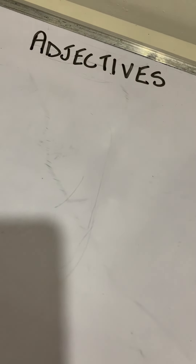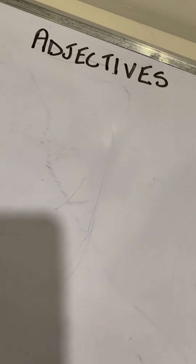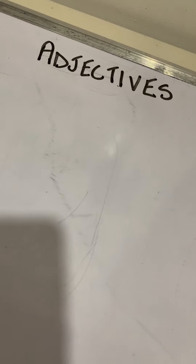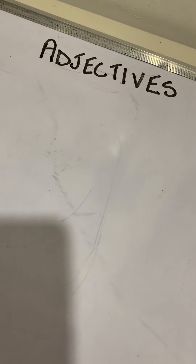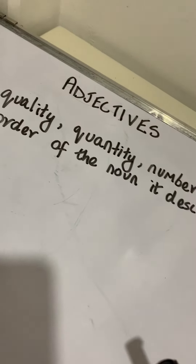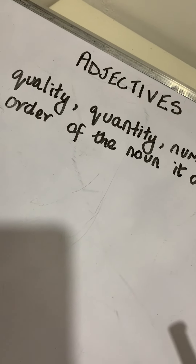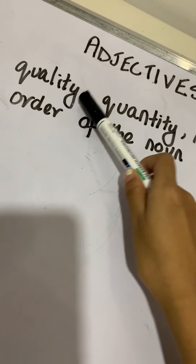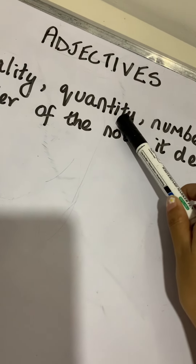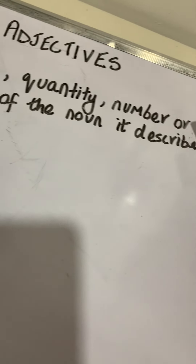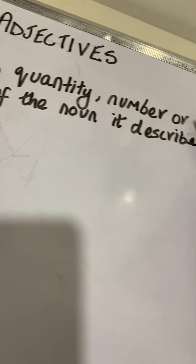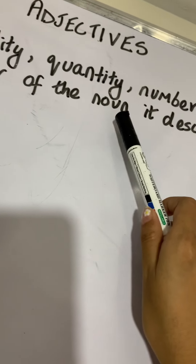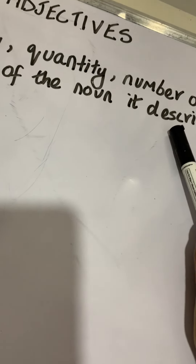An adjective is a word that tells us more about a noun or a pronoun. It tells about the quality, quantity, number, or order of the noun it describes.